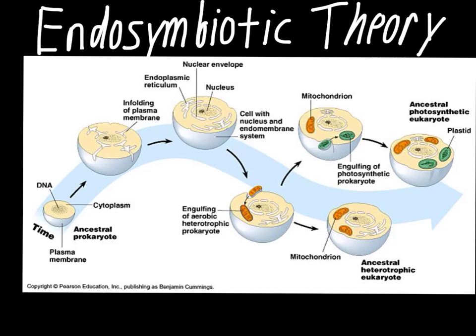There are two pieces of evidence that support this theory very well. The first is that the mitochondria has two membranes — an outer membrane and an inner membrane. It would have had the first membrane originally, and it gets the second membrane when it's brought in through the process of endocytosis into the larger cell. The second thing that supports this theory is that the mitochondria has its own DNA separate from the rest of the cell. Importantly, it's not helical DNA like the kind we have — it's circular DNA, which is the kind found in older prokaryotic cells.